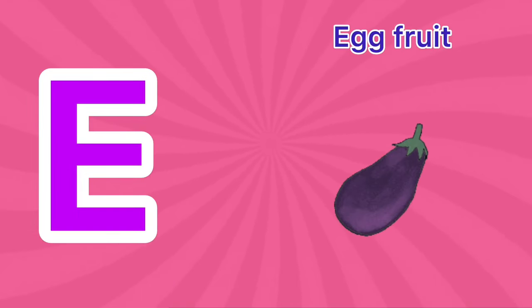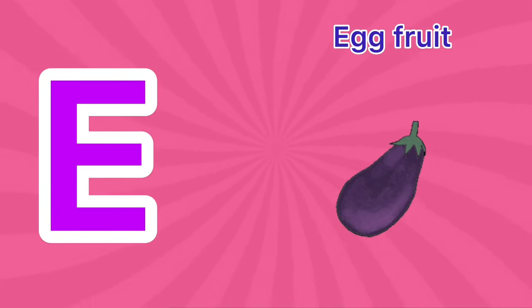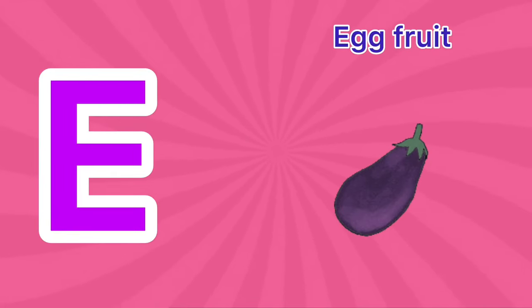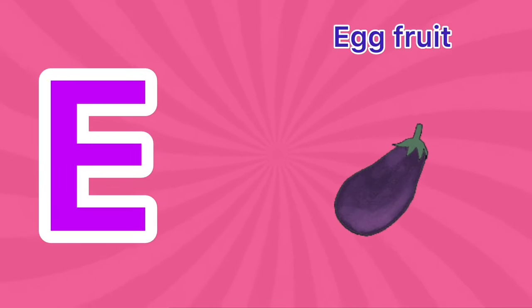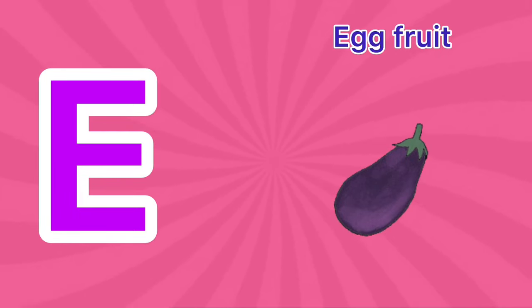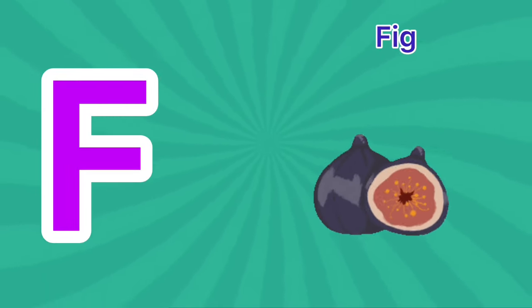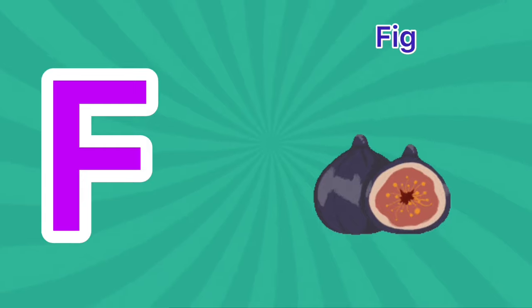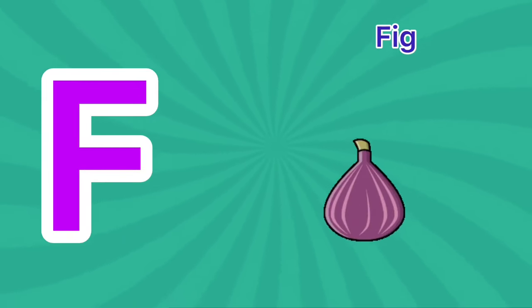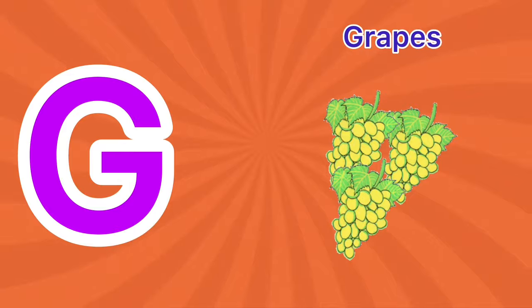E is for Eggfruit. E-E-E. Eggfruit. E is for Eggfruit. E-E-E. F is for Fig. F-F-F. Fig. F is for Fig. F-F-F.